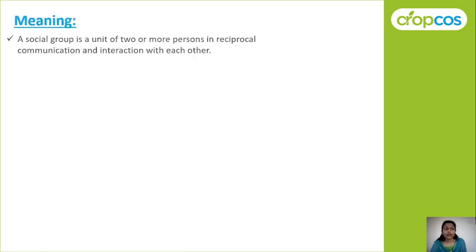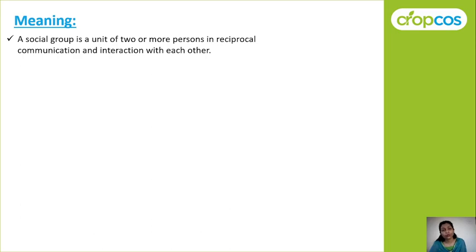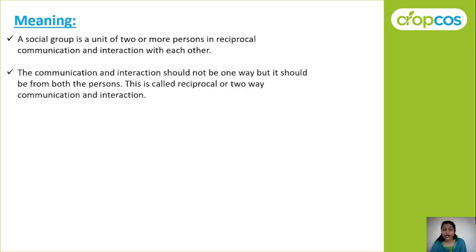A social group is a unit of two or more persons in reciprocal communication and interaction with each other. It is a unit of two or more persons — do ya do se zyada — and they are in reciprocal, meaning two-way, communication. The communication and interaction should not be one-way; it should be from both persons. This two-way exchange is called reciprocal communication and interaction.